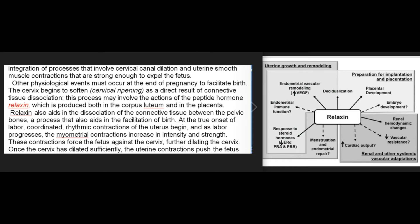The cervix begins to soften — cervical ripening — as a direct result of connective tissue dissociation. This process may involve the actions of the peptide hormone relaxin, which is produced both in the corpus luteum and in the placenta. Relaxin also aids in the dissociation of connective tissue between the pelvic bones, further facilitating birth. At the true onset of labor, coordinated rhythmic contractions of the uterus begin, and as labor progresses, myometrial contractions increase in intensity and strength, forcing the fetus against the cervix and further dilating it.